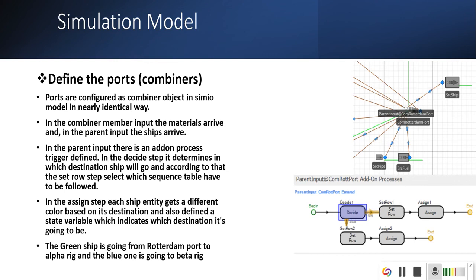For ports defined as combiners. In the parent input, as you can see, the decide step decides which destination it should go. The set row is defined. The set row function defines which sequence table you have to follow, and the assign step defines the color of the ship.